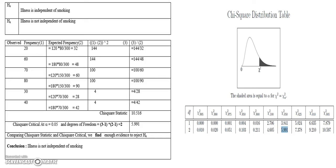In summary, the chi-square test of independence is quite simple: calculate the expected frequency, find the difference from the observed frequency, square it, divide by the expected frequency, and sum all sections to get the chi-square statistic. Compare it with the chi-square critical value from the distribution table. If the statistic is greater than the critical value, reject the null hypothesis. In this problem, chi-square statistic (10.516) exceeded the critical value, so there was enough evidence to reject the null hypothesis.